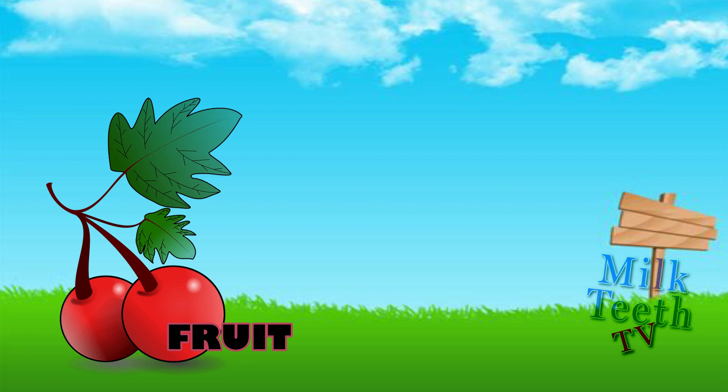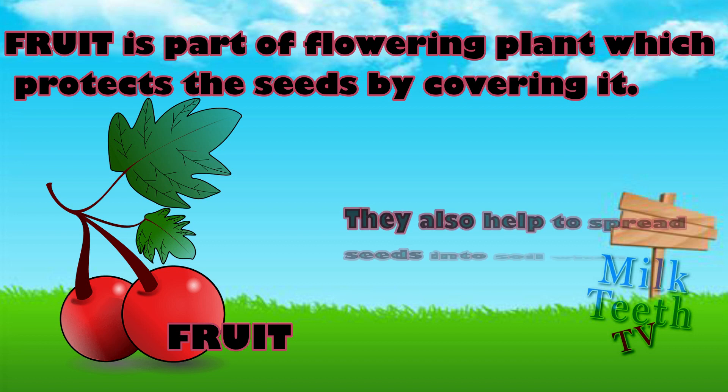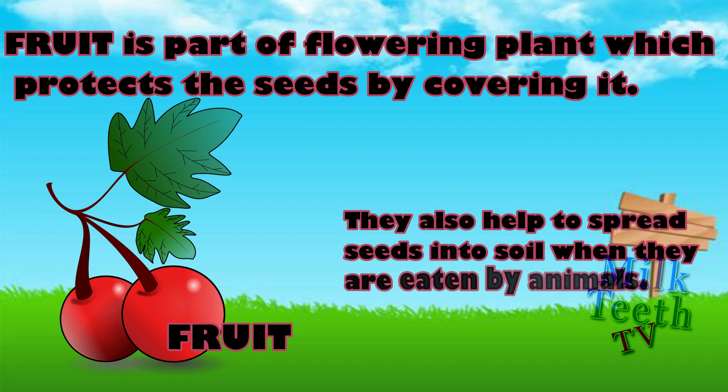Fruit. Fruit is the part of a flowering plant which protects the seeds by covering them. Fruits also help to spread seeds into the soil when they are eaten by animals, and they also become food for animals.